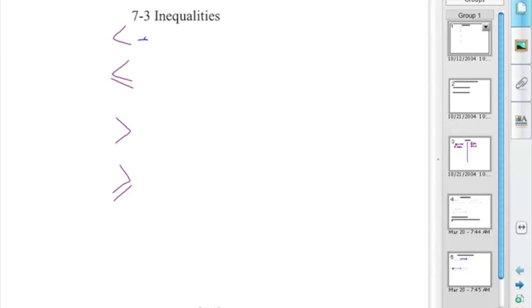The top symbol is the symbol for less than. You've seen this before, nothing new. The next symbol down is called less than or equal to.